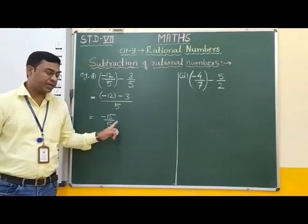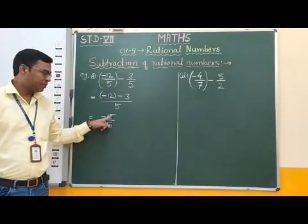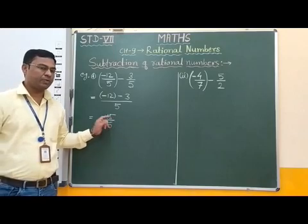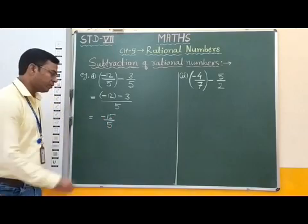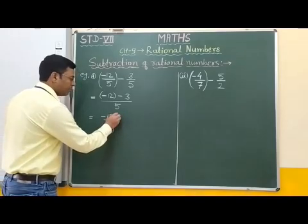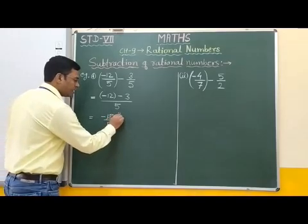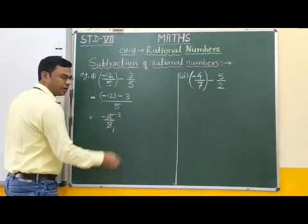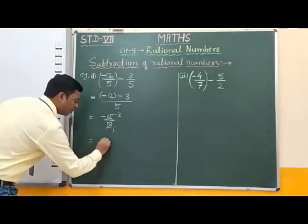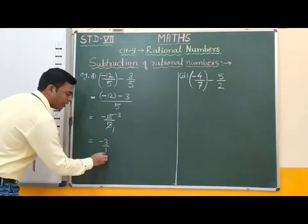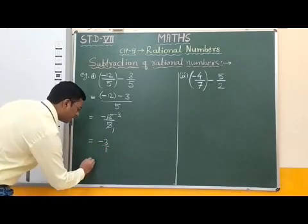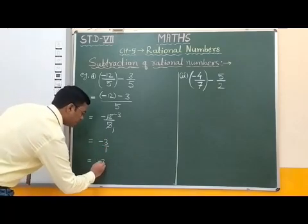Now students, if you observe here, 15 and 5 are both divisible by 5. Therefore we can simplify: 5 divides 15 giving 3, and 5 divides 5 giving 1. Therefore this is equal to minus 3 by 1, and since the denominator is 1, we can write this simply as minus 3.